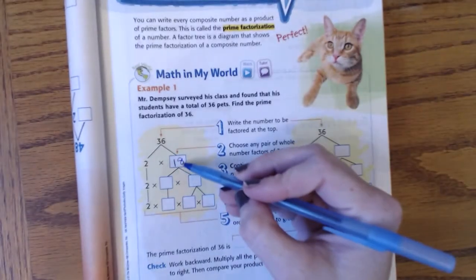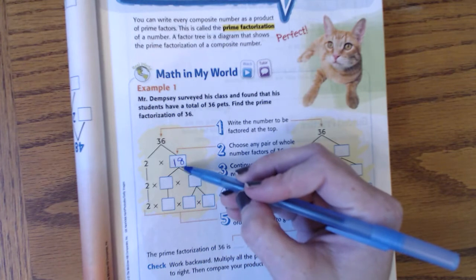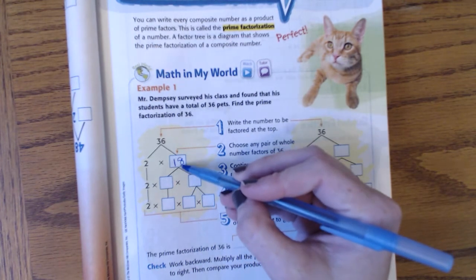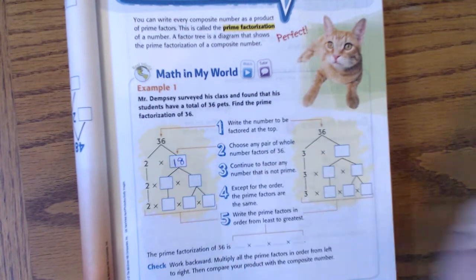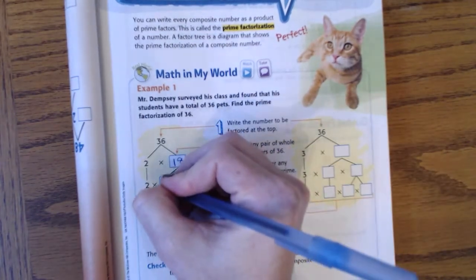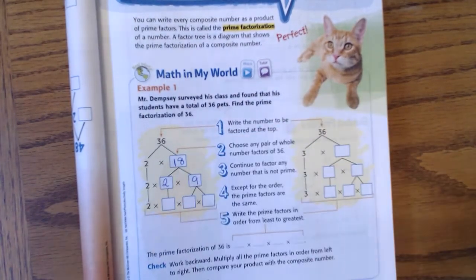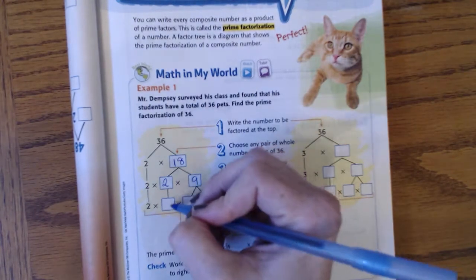Now I break down 18. So 18 is what two numbers multiply together? I'm going to pick 2 and 9. 2 can be broken down.